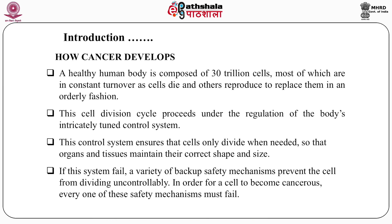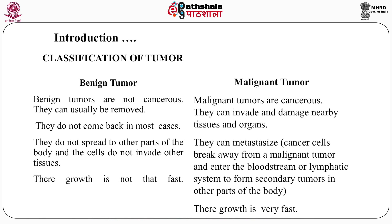If this system fails, a variety of backup safety mechanisms prevent the cell from dividing uncontrollably. In order for a cell to become cancerous, every one of these safety mechanisms must fail. Regarding classification of tumours, there are two types. Most tumours are benign, meaning they are not cancerous. Benign tumours can usually be removed by surgical process, do not come back in most cases, and do not spread to other parts of the body. The cells do not invade other tissues.